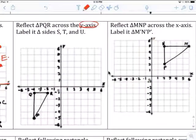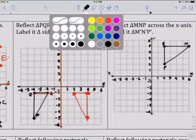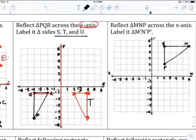Reflect over the y-axis. Here's the y-axis, reflect it. Four, four right over here. This last one is four, four right over here. And label it sides S, T, U.